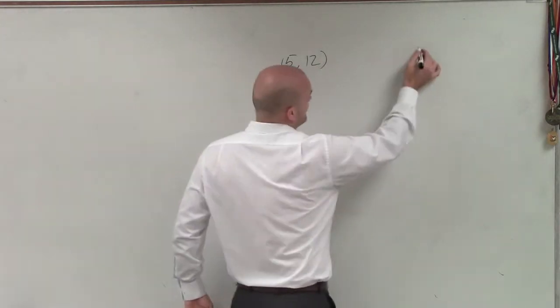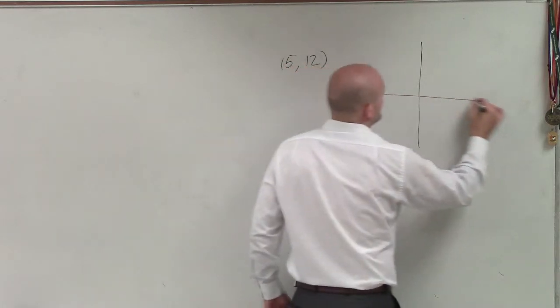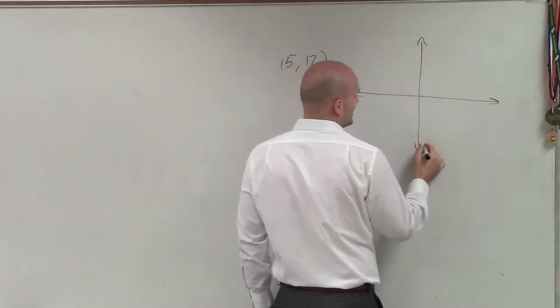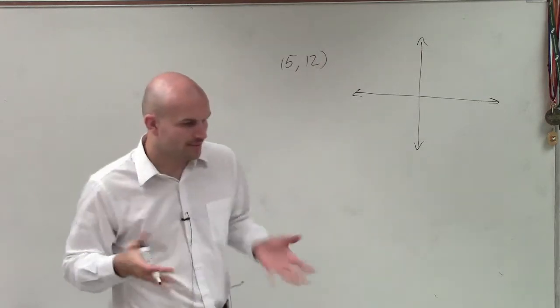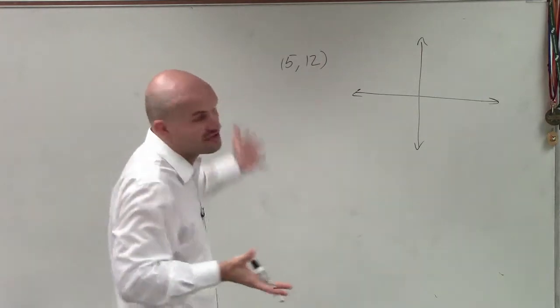So to do 5, 12, what we first need to do is if we're going to evaluate for sine, cosine, and tangent, we've got to make sure we create a triangle. Now, when looking at this, to create a triangle, we need to first plot the point.